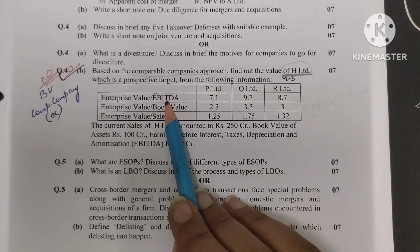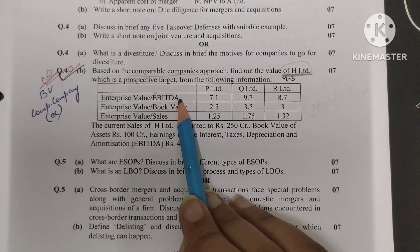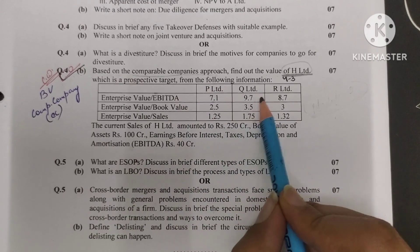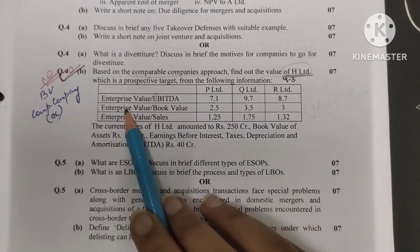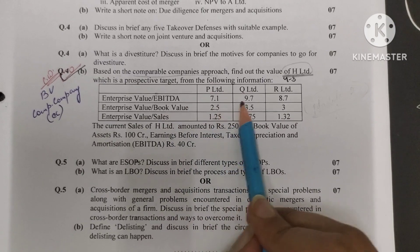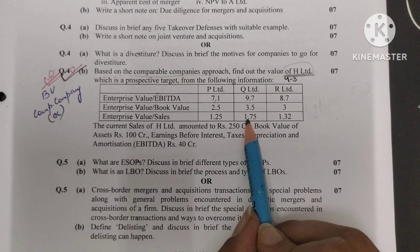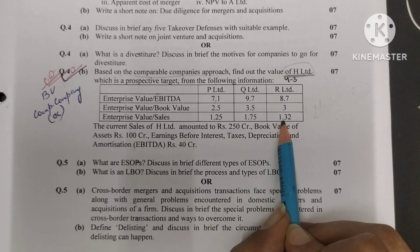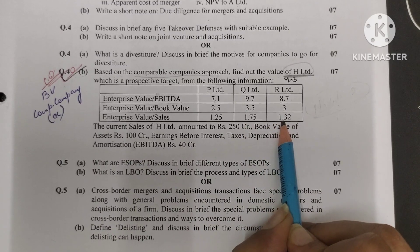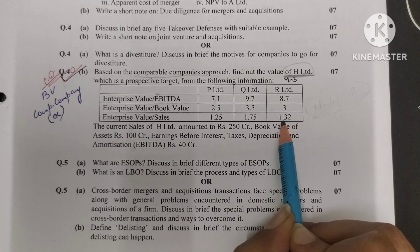Enterprise value to EBITDA, that is earnings before interest, tax, depreciation and amortization: 7.1, 9.7, 8.7. Enterprise value to book value: 2.5, 3.5, 3. Enterprise value to sales value: 1.25, 1.75, 1.35.